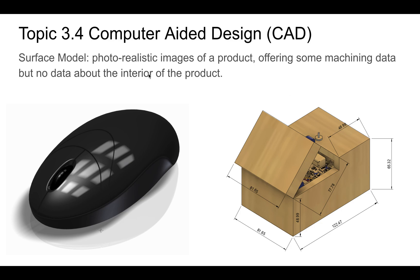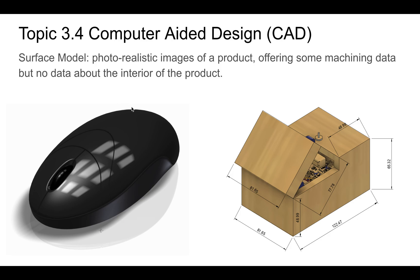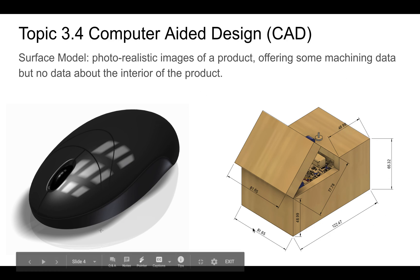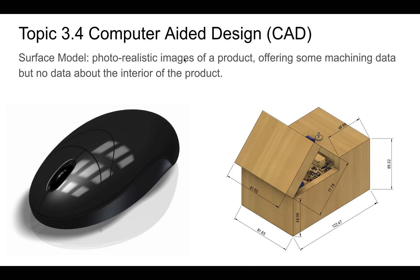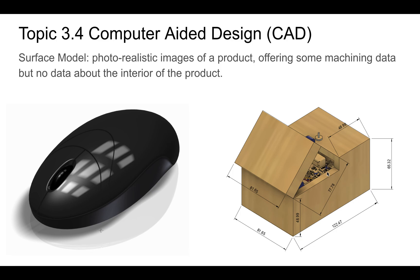These are some definitions you need to learn. A surface model is a realistic image of a product made with a computer — it's designed on a computer, not a real object, but it looks like one. Surface basically means there might be some machining data, like sizes in millimeters, but there's no data about the interior of the product. We don't know anything about the inside of the object.